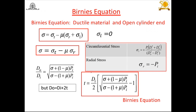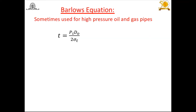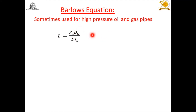Another expression available for thick cylinders is Barlow's equation, applicable to high pressure oil and gas pipes: t = Pi * Do / (2 * sigma_t). This resembles the thin cylinder wall thickness expression, except that the outer diameter Do is used instead of the inner diameter, as it is a thick cylinder. Barlow's equations are also used when the cylinder is a high pressure oil or gas pipe.